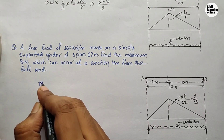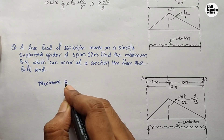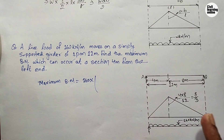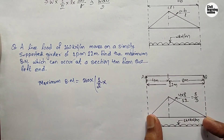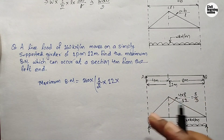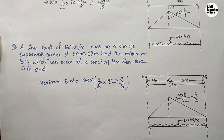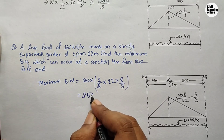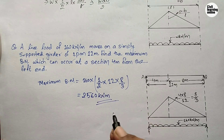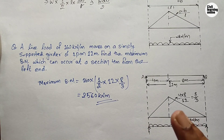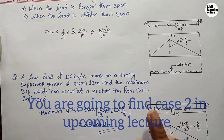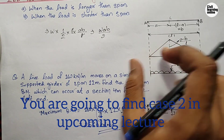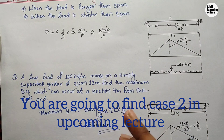Maximum bending moment = intensity × area of triangle = 160 × (1/2 × 12 × 8/3) = 160 × 16 = 2560 kN·m. That is the maximum bending moment when the load is longer than the span. Now let's move to the second condition — load shorter than span — where I'll first explain the concept and then work through an example.